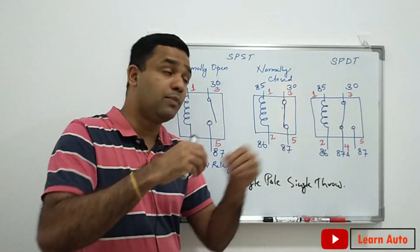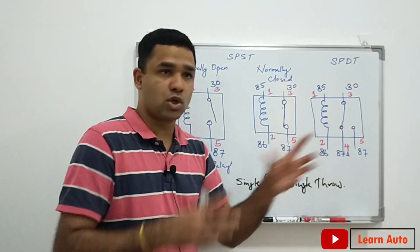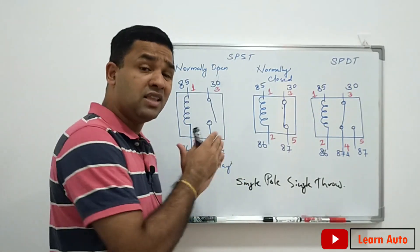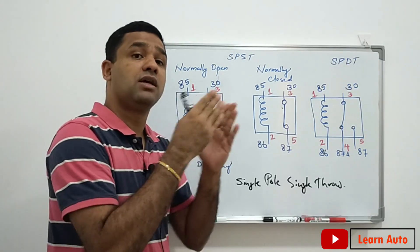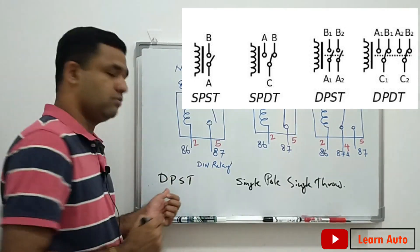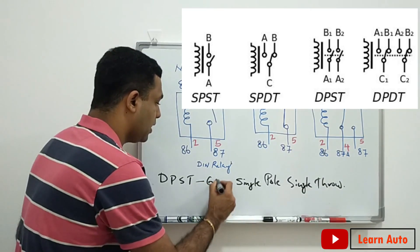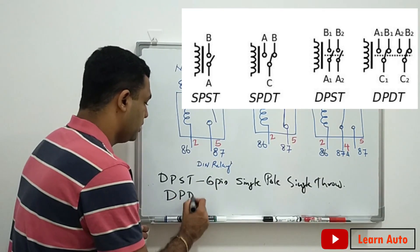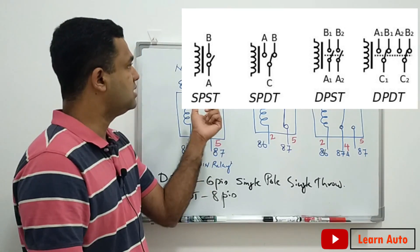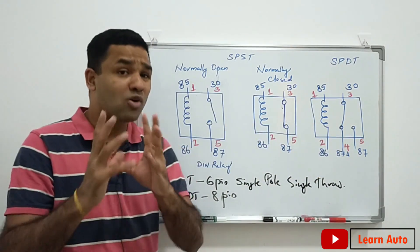SPDT — Single Pole Double Throw. That's why we have two output points. DPST — Double Pole Single Throw. DPDT — Double Pole Double Throw. Single pole single throw is four pin; single pole double throw is five pin.